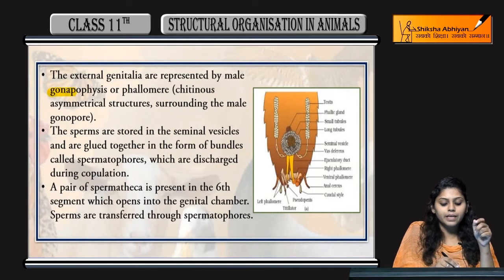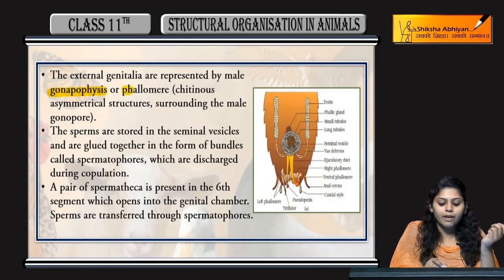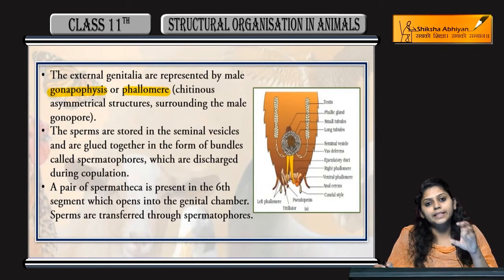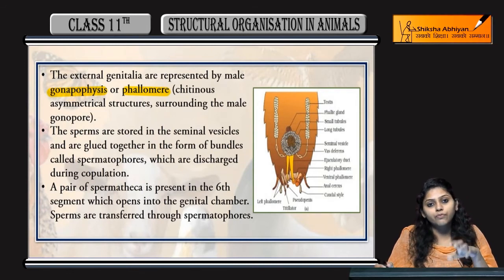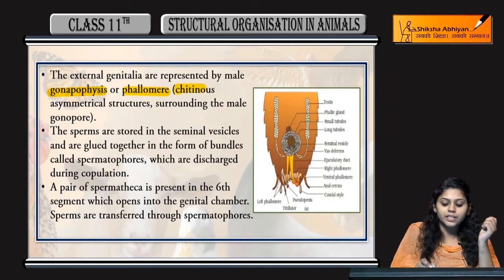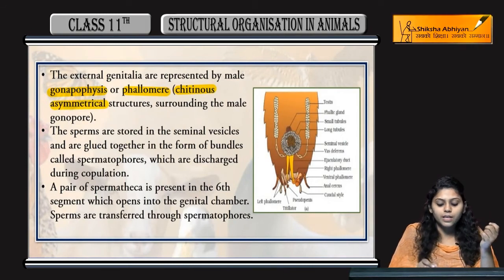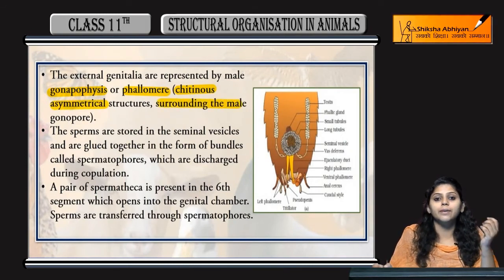External genitalia in male cockroaches are represented by male gonophores and phallomeres. These are chitinous asymmetrical structures that surround the male gonophore.